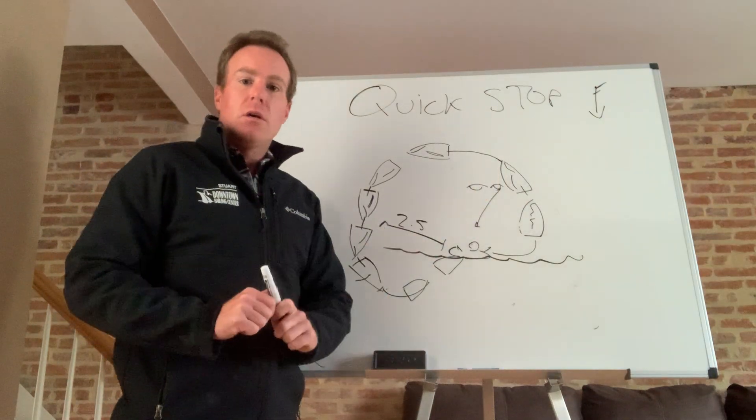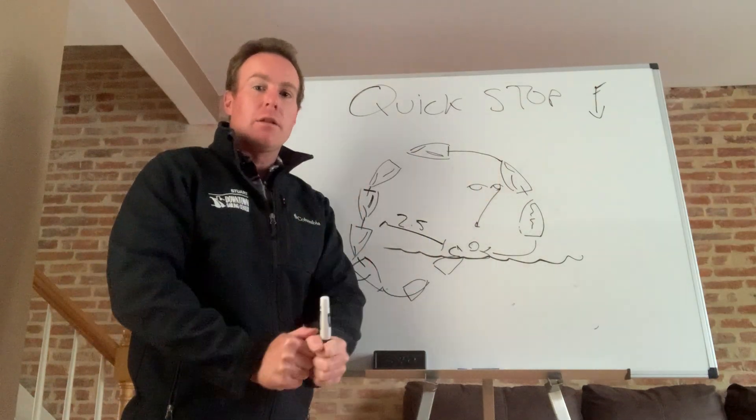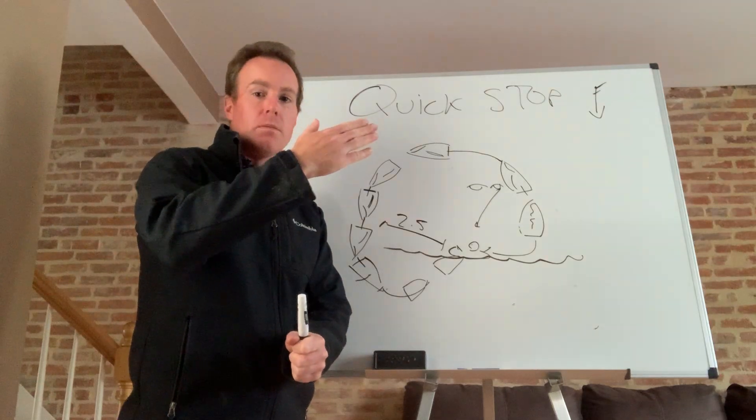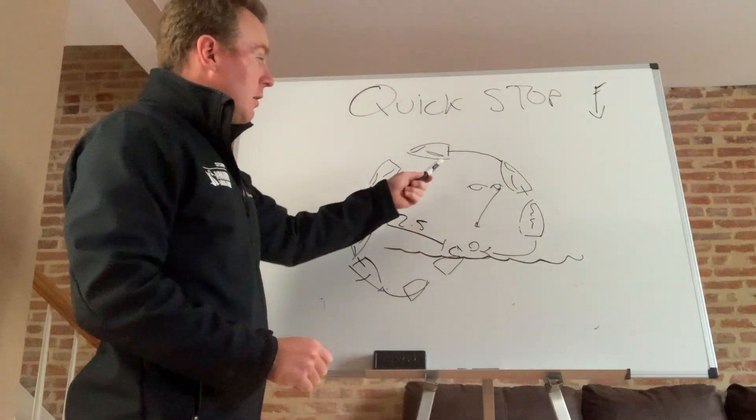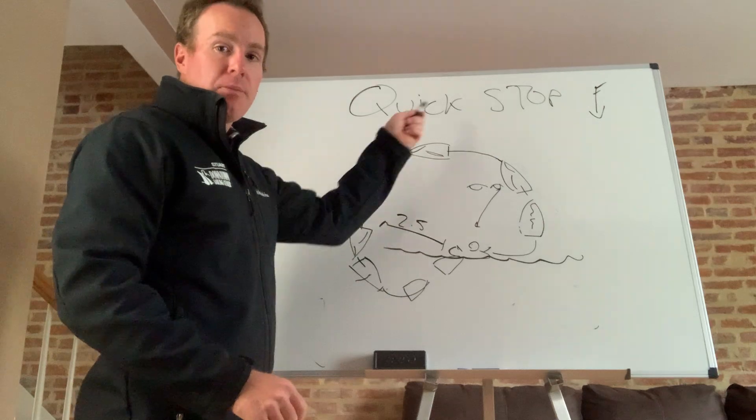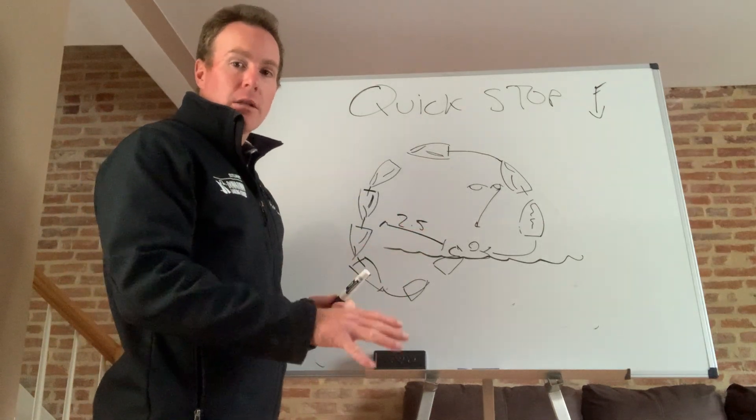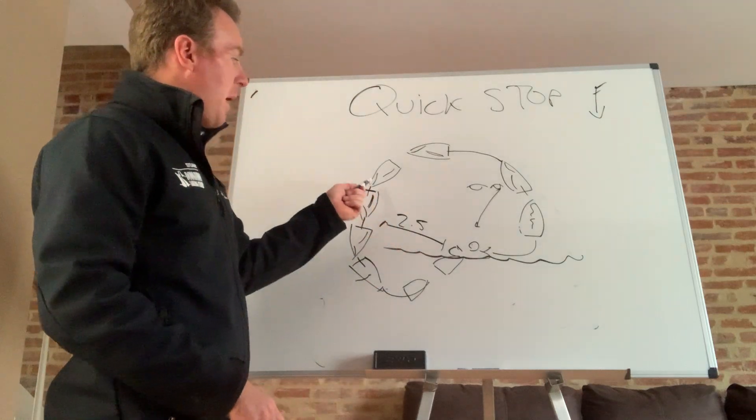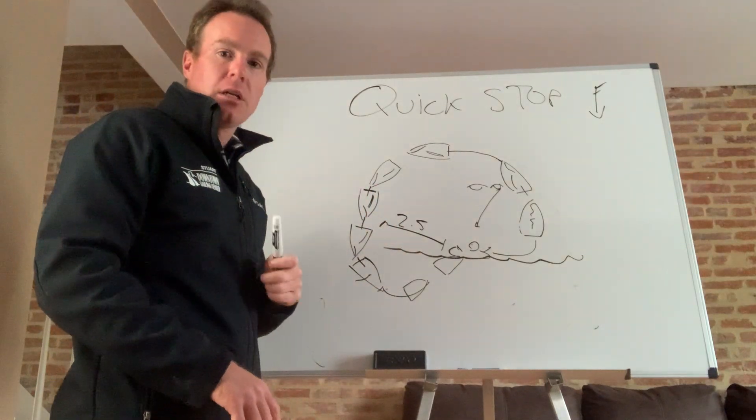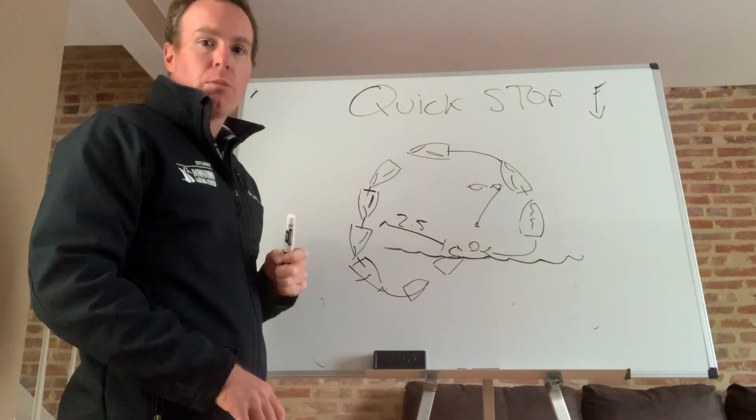Second thing, make sure that that jib is in tight and cleated before you tack over. The third thing, if possible, keep that main in tight. But if needed, you can ease it to bear away a little bit as long as you bring it back into tight, into centerline, once you go on the broad reach.